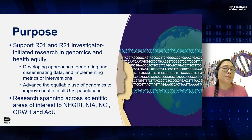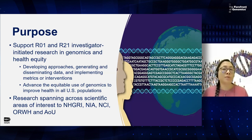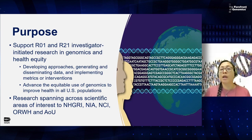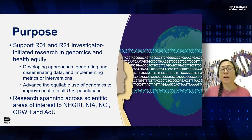NHGRI was really excited to partner with our other collaborators at NIH to be supporting R01 and R21 investigator-initiated research in genomics and health equity. For us, this includes developing approaches, generating and disseminating data, and implementing metrics or interventions in order to advance the equitable use of genomics to improve health in all U.S. populations. We want to note that this is a fairly broad opportunity. We want to encourage research that spans the scientific missions or areas of interest to NHGRI, NIA, NCI, ORWH, and the All of Us Research Program.